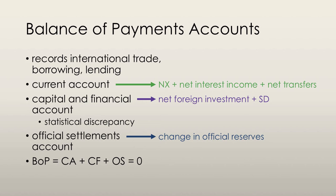The current account records receipts from exports sold abroad, payments for imports, net interest income paid, and net transfers. So it's equal to net exports plus net interest income plus net transfers.